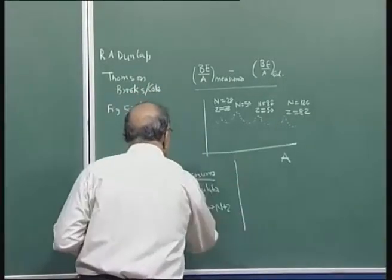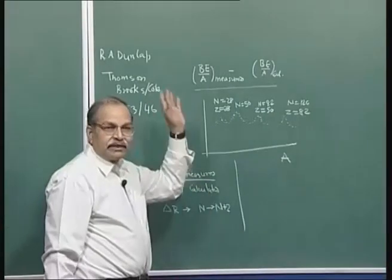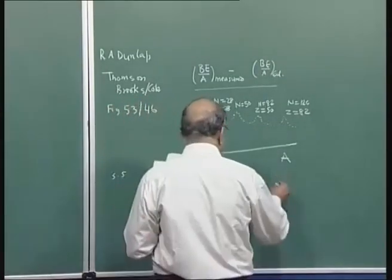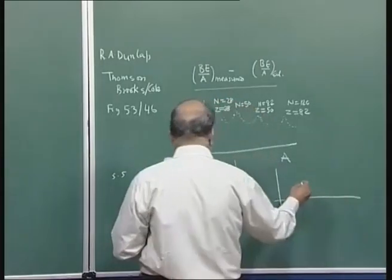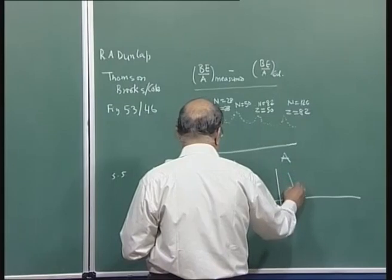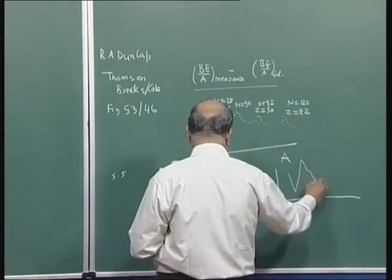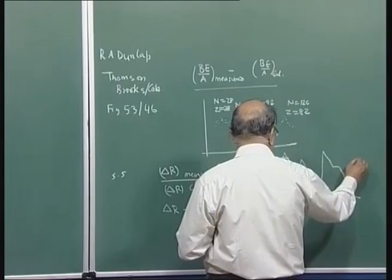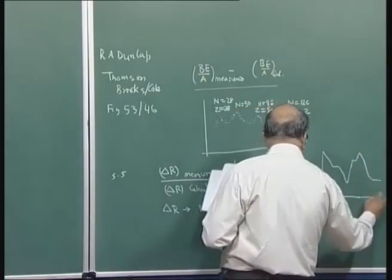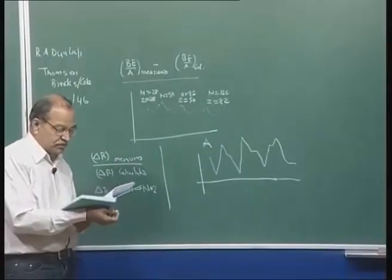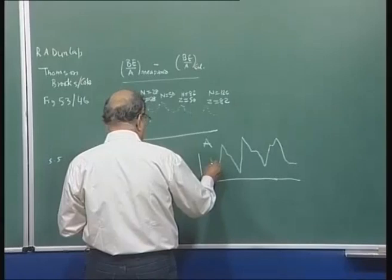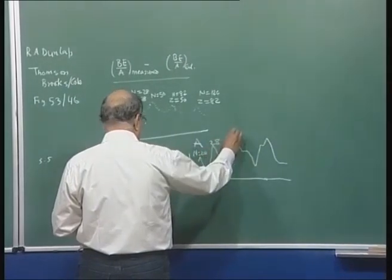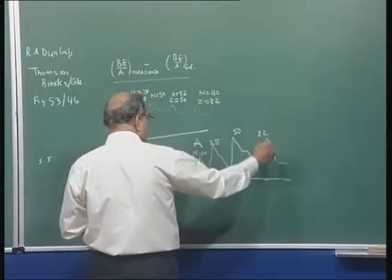The ratio of measured to calculated radius change — where the calculated value uses R = r₀ A^(1/3) — again shows ups and downs as a function of neutron number. The numbers at which discontinuities appear are N = 20, 28, 50, 82, and so on.